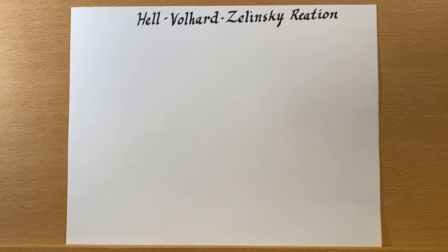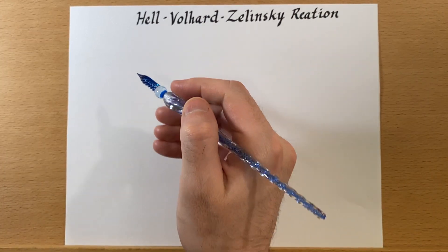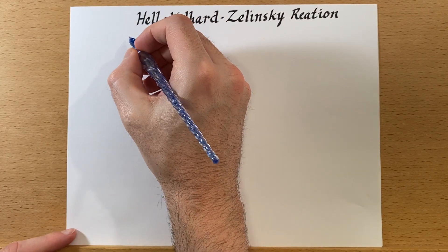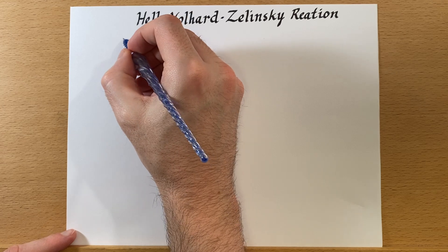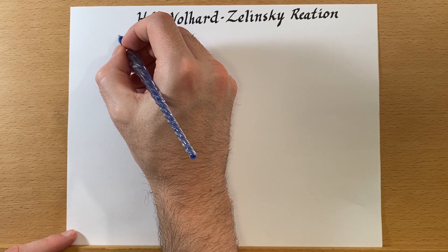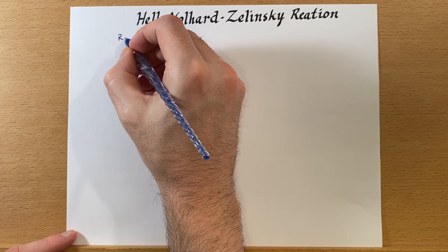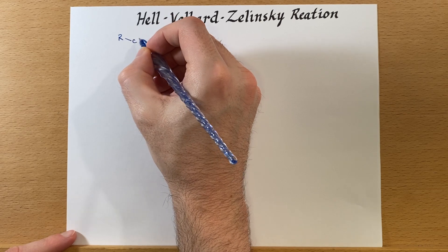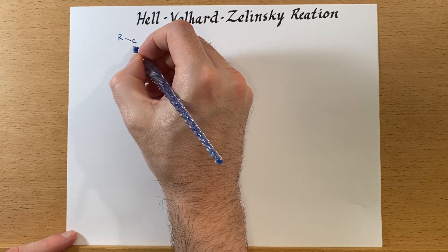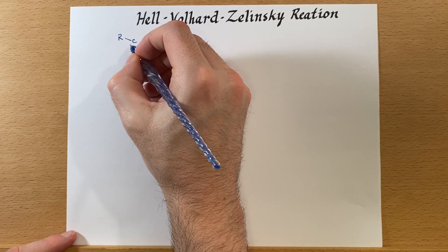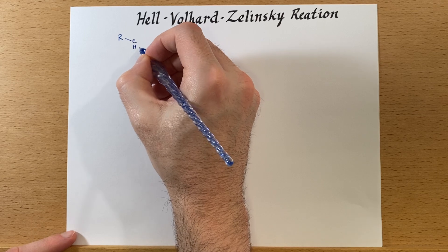Now let's talk about the Hell-Volhard-Zelinski reaction. We're going to look at the alpha carbons on a carboxylic acid, and we've looked at reactions where we've brominated or chlorinated these hydrogens.